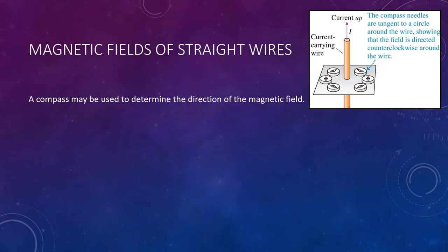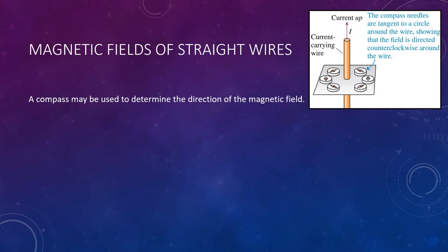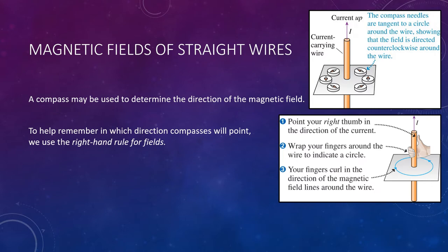We can use compasses to determine the direction of the magnetic field, just as we did with a bar magnet in the previous lecture. Now we're talking about loops, so we'll use multiple compasses. In the diagram, current moving upward through the wire produces a counterclockwise pattern of magnetic field lines. If you reverse the current downward, you would see the opposite. To remember the orientation, we introduce the right-hand rule.